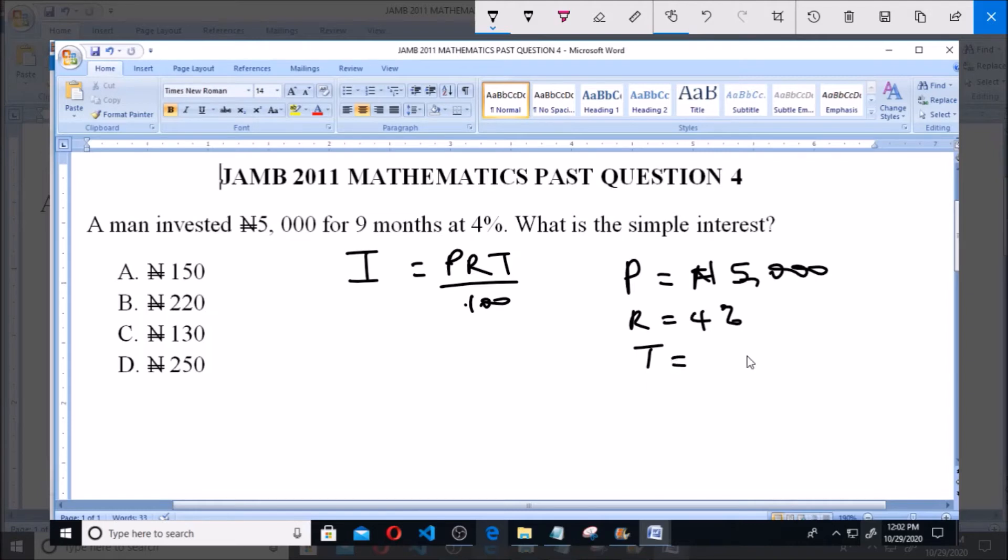So we have to convert it to years. To convert it to years, since we have 12 months in a year, that will be 9 over 12 which equals 3 over 4 years. So the simple interest I will equal...